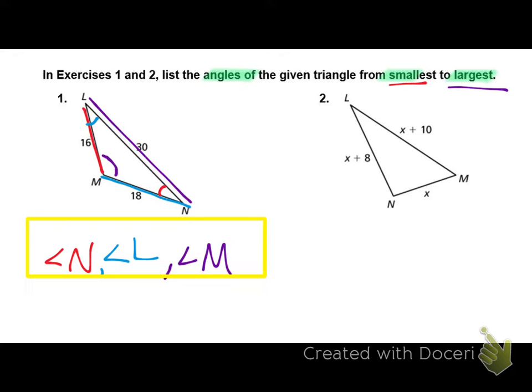The second, we're going to start with the smallest. Which is the shortest side? X, which is across from angle L. The middle, the medium side length, X plus 8, which is across from M, like Marshall. And then last, the longest side is across from the largest angle, angle N.